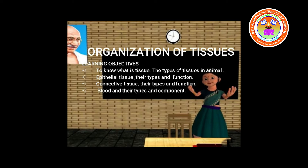Glandular epithelial tissue: glandular epithelial cells are specialized epithelial cells that perform the function of secreting hormones, sweat, mucus, enzymes, and other products. Two types of glands are exocrine or duct glands and endocrine or ductless glands. Some columnar or cuboidal cells get specialized for secretion and are called glandular epithelial tissue. Types include unicellular, seen in glandular cells in the alimentary canal, and multicellular glandular cells, seen in the salivary gland.